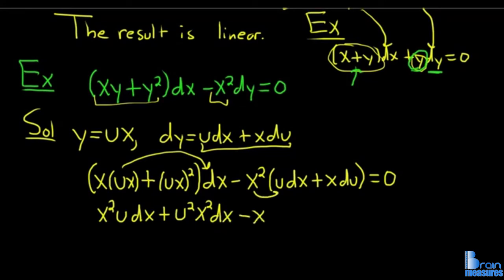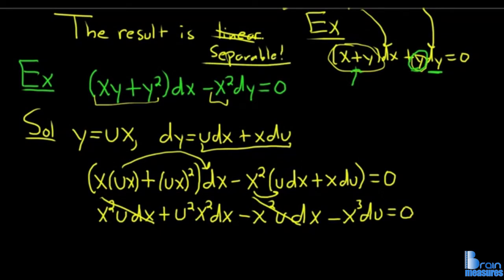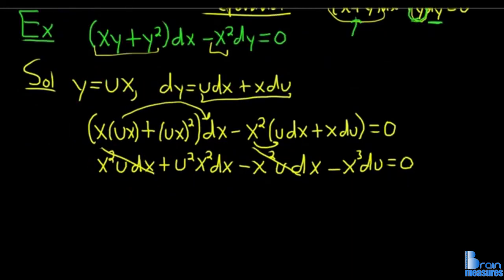Let me carefully distribute. We have x²udx + u²x²dx - x²udx - x³du = 0. Does anything cancel? Yes, this cancels. Does that always happen? No, it does not. In this case stuff canceled so life is good. This is going to be a separable differential equation.